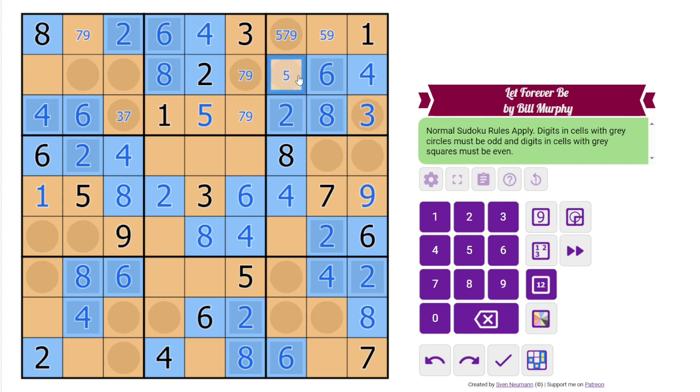That makes that a 3. So that means these are 5, 7, 9. Okay, the 3 resolves 7, 9, 7, so that can't be 7, so the only place for 7 in this box is here. That resolves 9, 5, 9, just need to start where there are 3 givens already.